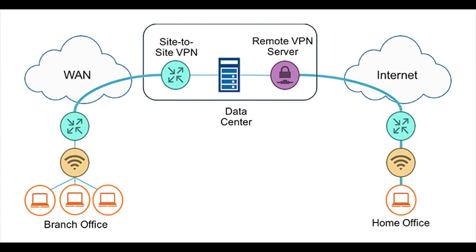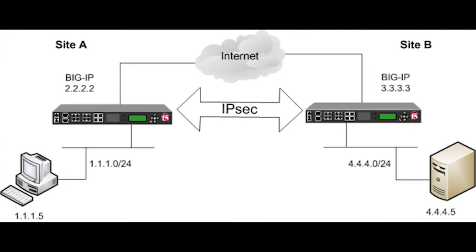There are two types of VPN: a remote access VPN, which connects remote users from any location to a corporate network, and a site-to-site VPN, which connects individual networks to each other. IP security is used to create an encrypted tunnel from one customer network to a remote side. In remote access VPN, individual users are connected to the private network, allowing them to access the services and resources of that private network remotely. It is most suitable for business and home users, and multiple users are allowed.